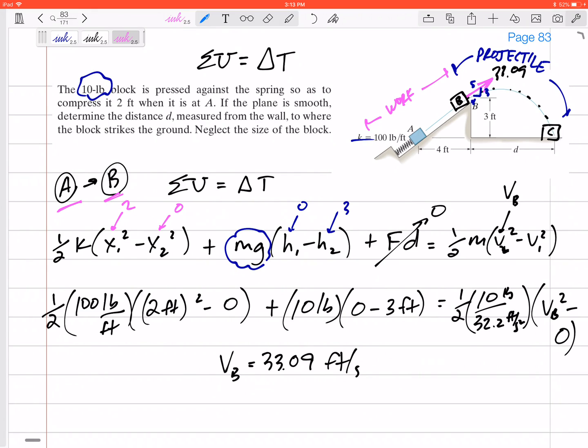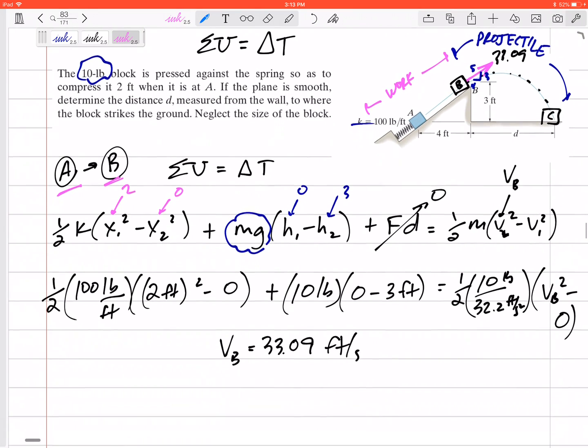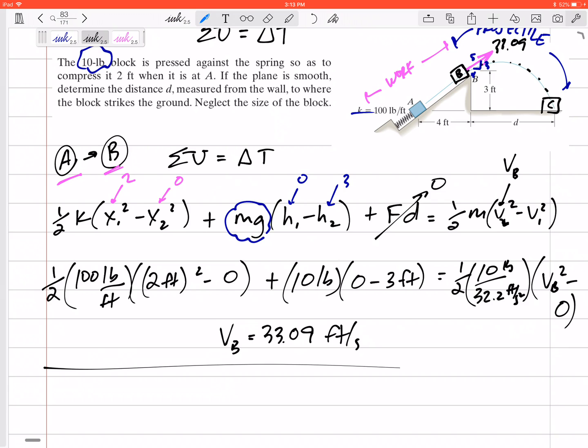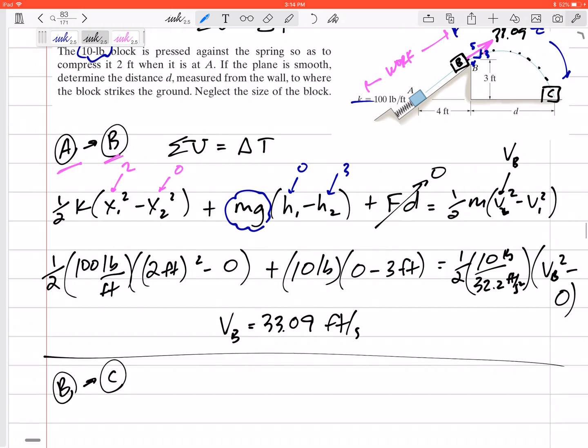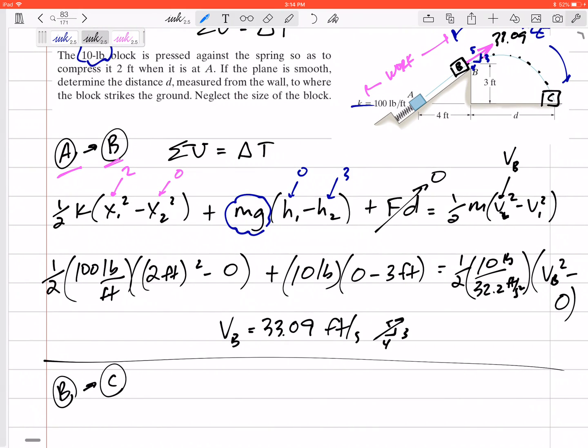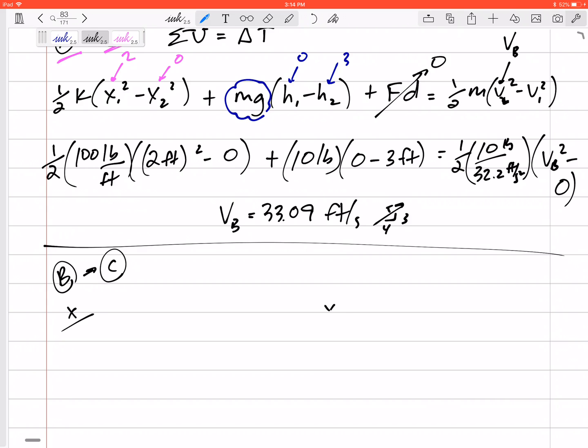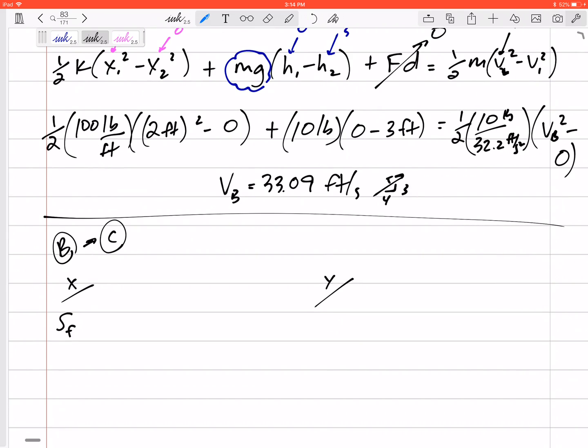I can think about it as a projectile from here to here. I just was doing work energy from there to there. And I could actually do work energy from B to C, but that wouldn't give me D. D is nowhere in my work energy equation, but it is in my projectile equations. Alright, so projectile from B to C, knowing that it's going at 33.09, knowing that it's going up at this 4, 3, 5 direction. Alright, how do you do projectiles? I like to separate X from Y. I could use any of my constant acceleration equations. I like to use this, I think it's the third one.